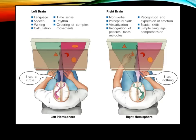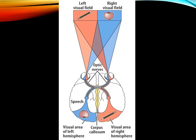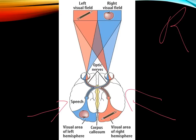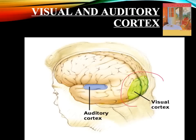Not only does the left hemisphere control the right side of our body and the right hemisphere control the left side, but it also crisscrosses at the corpus callosum and the thalamus for our visual sensory inputs. The right eye will crisscross its frontal view over to the left hemisphere, whereas the left eye will crisscross its frontal view over to the right hemisphere. Note that the visual cortex is in the occipital lobe and the auditory cortex is in the temporal lobe — these cortexes do not take up the entire lobe, as those lobes have other functions, some known and some unknown.